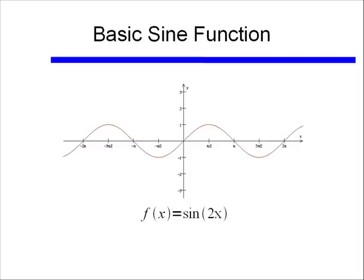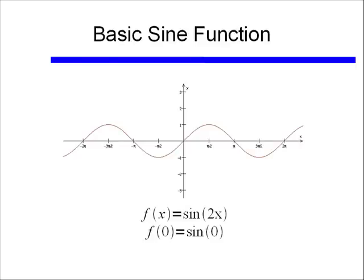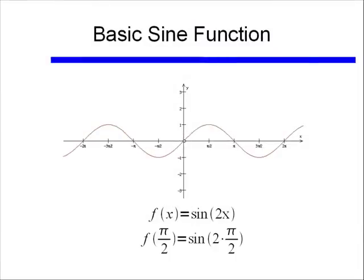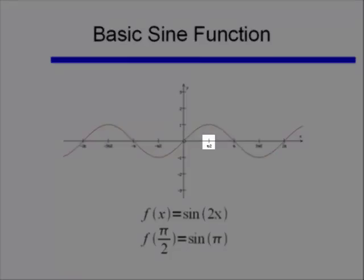Let's look at sine(2x) and see how that affects the period of the function. At f(0), plugging 0 into x gives sine(2·0) = sine(0) = 0, which I've graphed. At x = π/2, sine(2·(π/2)) = sine(π) = 0. And at x = π, f(π) = sine(2π) = 0.